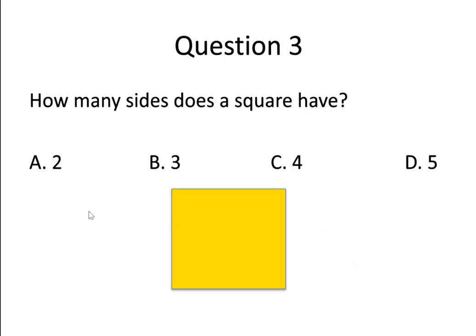Question number 3. How many sides does a square have? Option A, 2. Option B, 3. Option C, 4. And option D, 5.